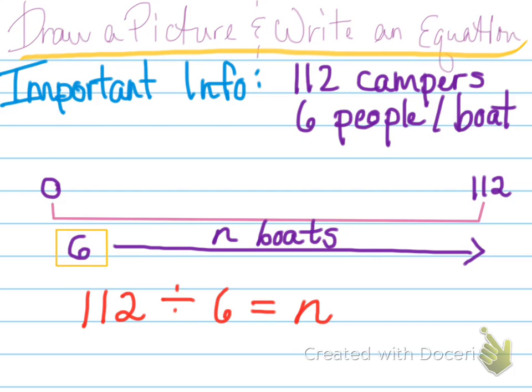Here's my equation, 112, which is the total number of people, divided by 6, which is how many people can fit in one boat, equals N. N is the number I need to find out how many boats there are.